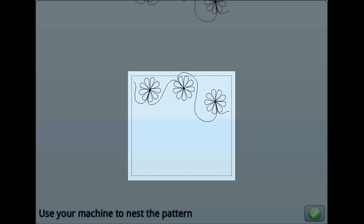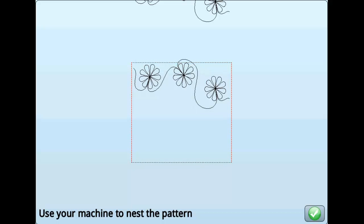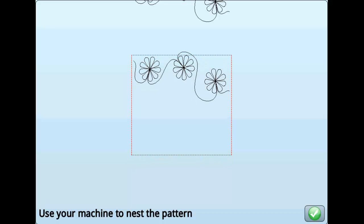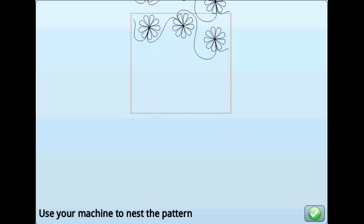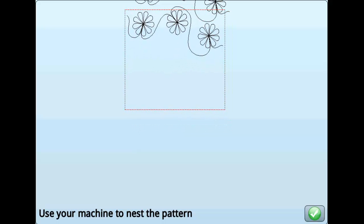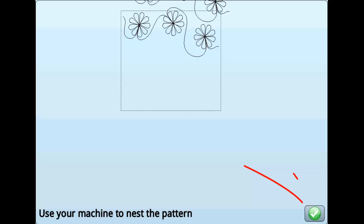The pattern box and patterns shown below need to be nested with the top pattern. Move your machine on the frame to control the placement of the to be nested pattern. When its placement is acceptable, press the green check mark.